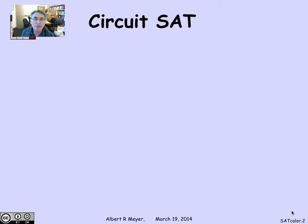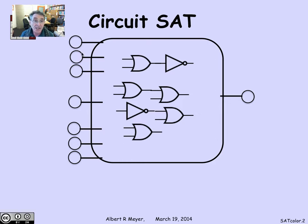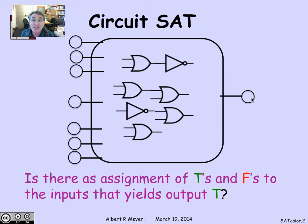The circuit SAT problem is that you're given some digital circuit, using standard digital circuit designer symbols. There's an OR gate with two inputs and one output, and an inverter or NOT gate with one input and one output. You connect up a bunch of these OR gates and NOT gates to build a digital circuit. The inputs can be thought of as either trues or falses, or ones and zeros, and there's one output. The question is: given this wired-up circuit, is it possible to assign input values that would make the output value true? That is the circuit satisfiability problem — is there an assignment of Ts and Fs to the inputs that yields output T?